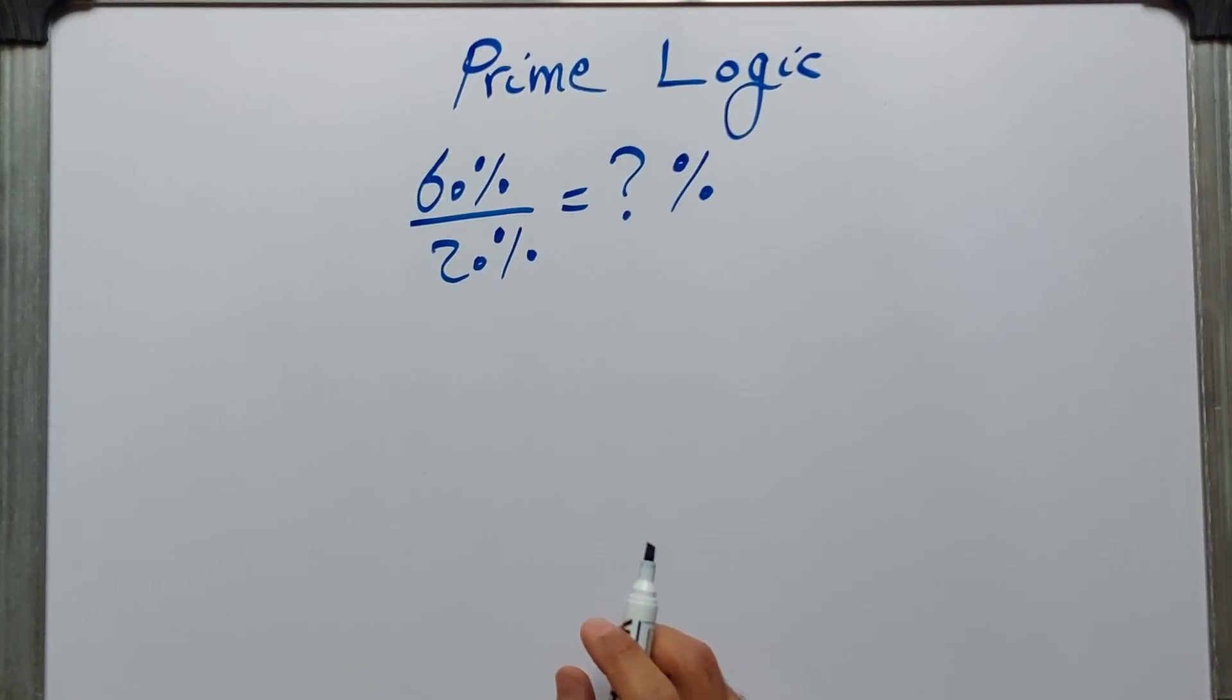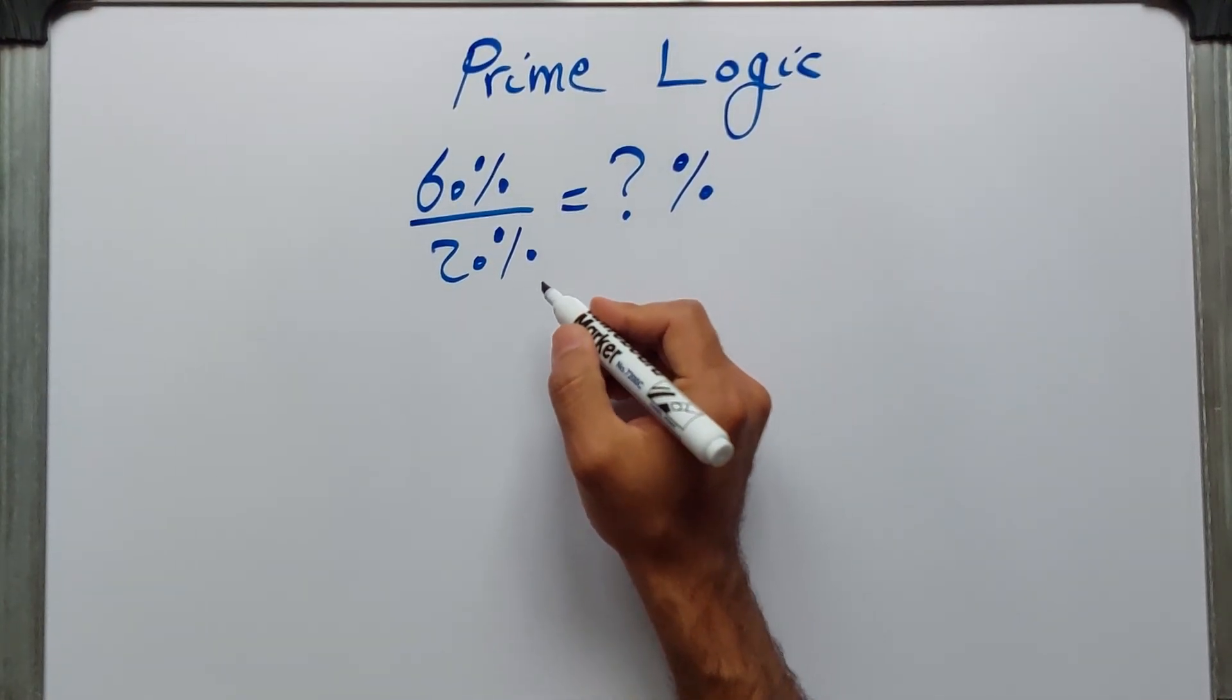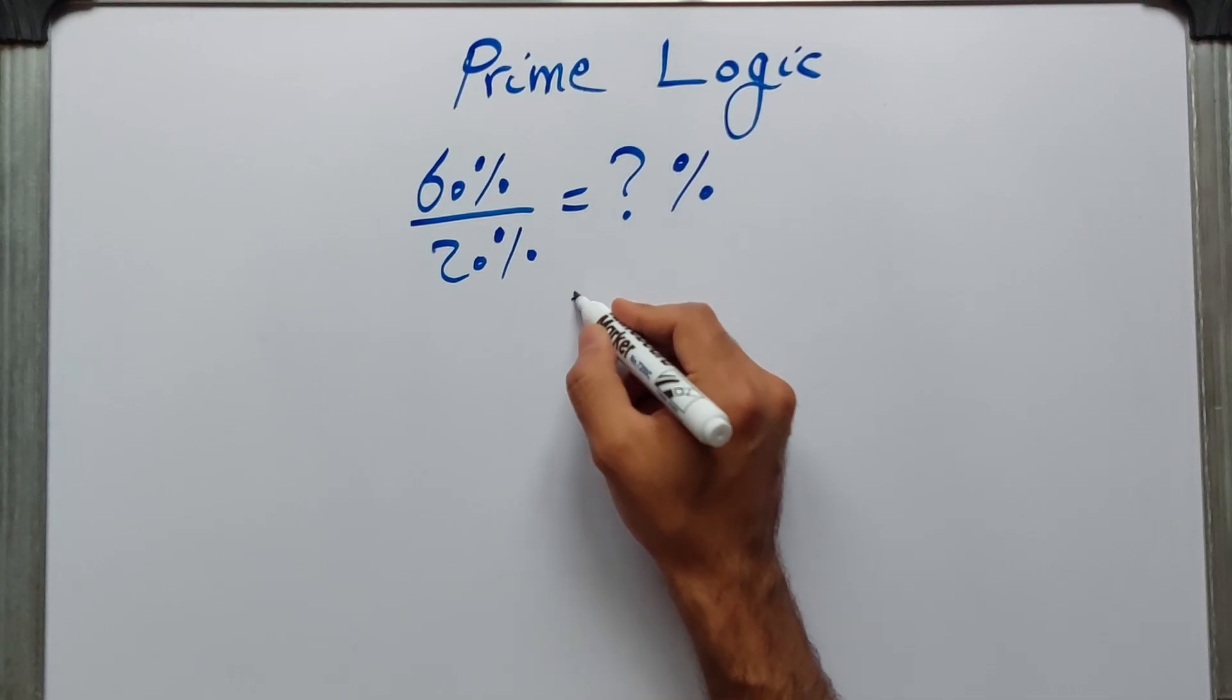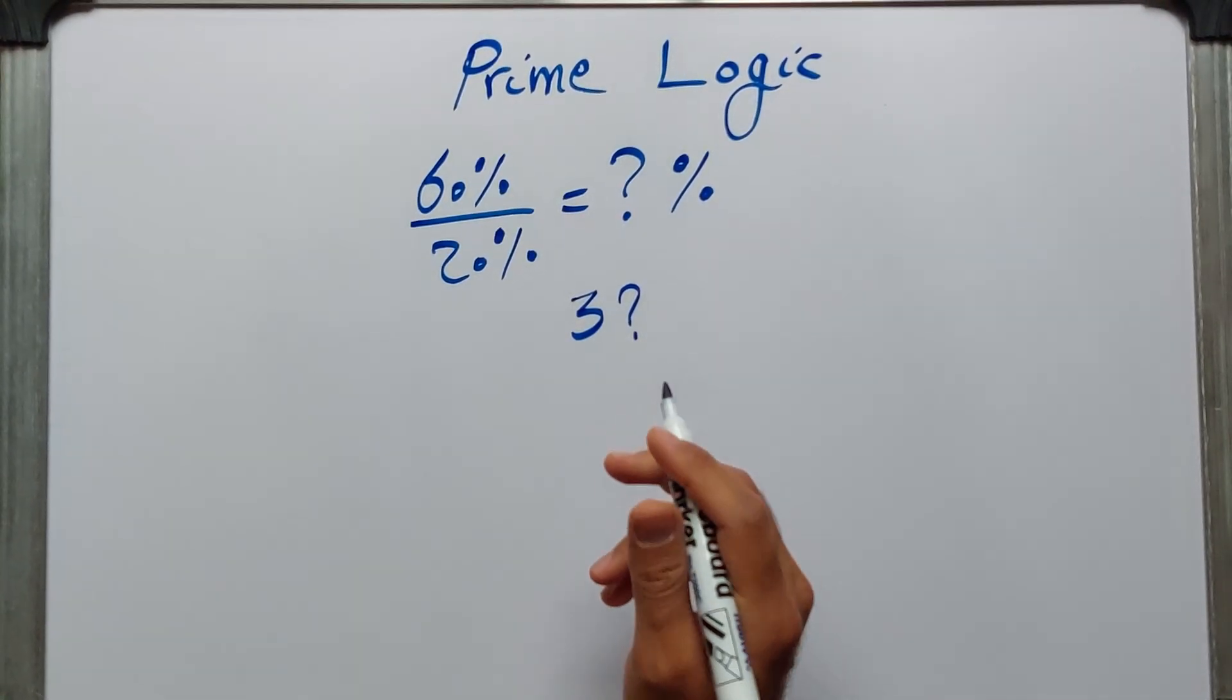So what do you get when you divide 60% by 20%? At first glance, you might guess three, right? But it's not the answer.